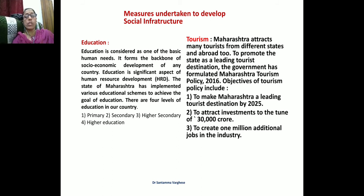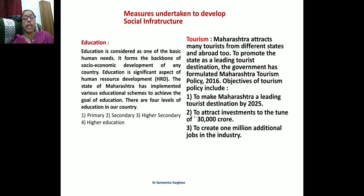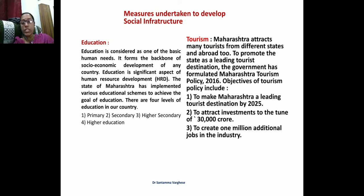In primary education (Classes 1 to 8), the number of schools in 2016 was 1,04,971 and total enrollment was 1,59,086. The number of teachers was 5.30 lakh with a pupil-teacher ratio of 30:1. The government is taking important measures for improvement of education in different sectors.